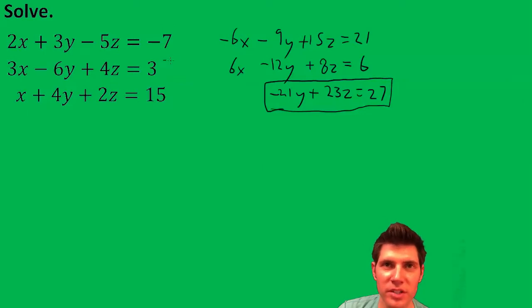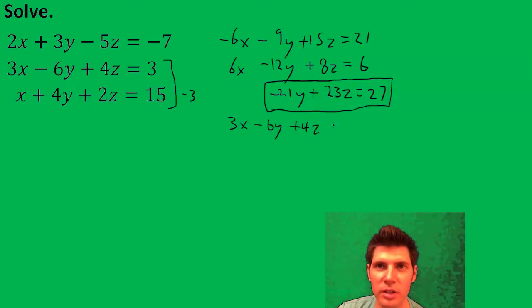Now I'm going to do the same thing for the second two. And I'm going to also get rid of x. So I'm going to leave this top one alone and multiply the bottom one by negative 3. So it's going to be 3x minus 6y plus 4z equals 3.